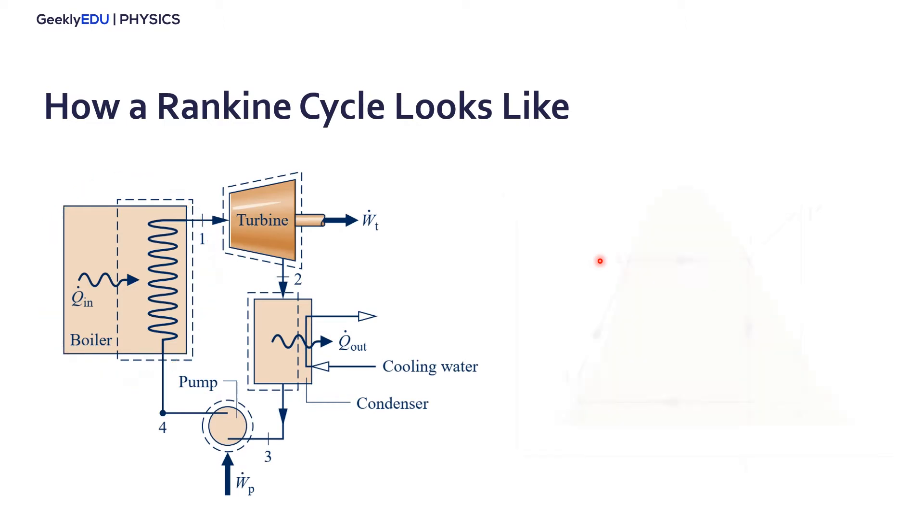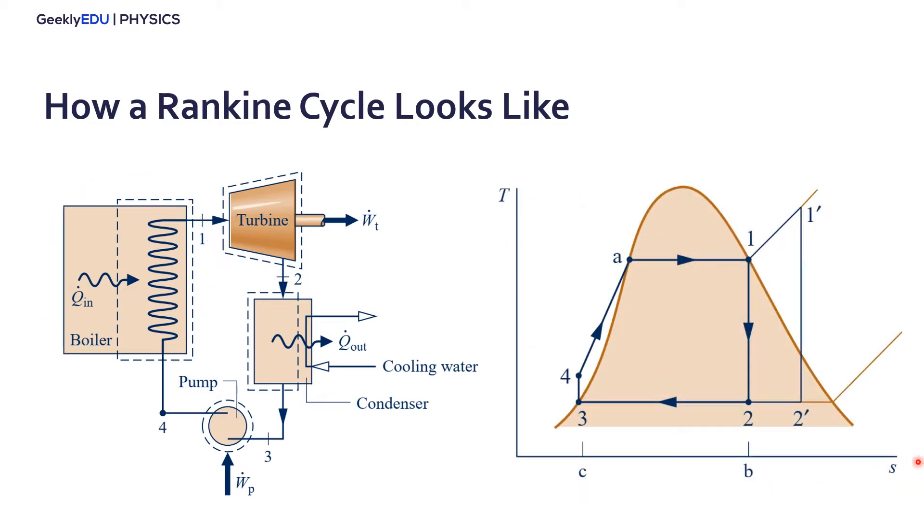And this is the TS diagram for the Rankine Cycle. So let's start here from point number one, the inlet of the turbine. At this point here we can have saturated water vapor or superheated vapor. It depends on how much you increase the temperature of the water, depends on how your cycle works.